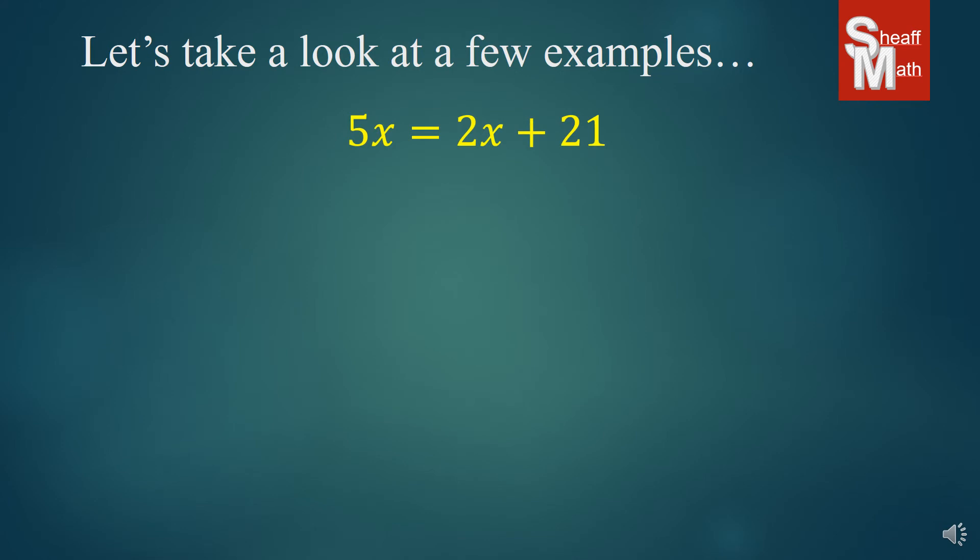All right, sometimes equations look different than the ones that you've practiced and so we're going to try to go through all sorts of different variations of it. The only difference between this one and the others is that there's no integer on the left-hand side adding or subtracting from the 5x, but that's okay, we're still going to do the same thing that we do. We want the x's on the left so we're going to subtract 2x on both sides, canceling that out, and I get 3x equals 21. Now I only have one step to do so this was actually easier. I'm going to divide by 3 and I get x equals 7. Not too bad, right?